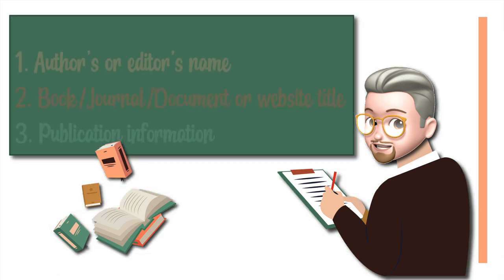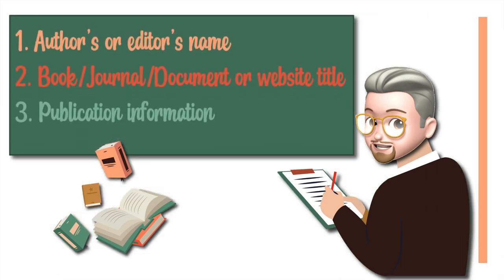So now let's recap. What do we need first? We need the author's or editor's name. Number two, we need the book, journal, document, or website title. And number three, the publication information. That's all we need to cite a book, a document, a journal, or a website.